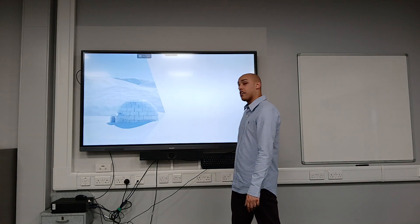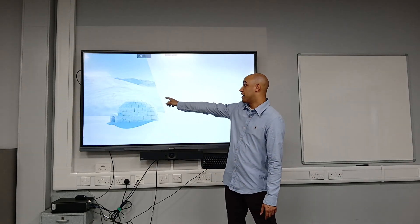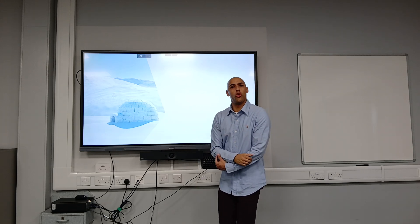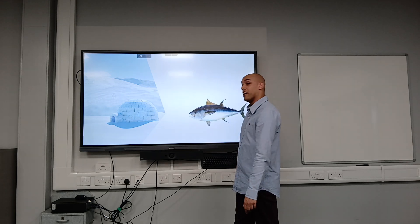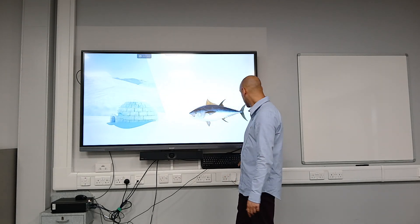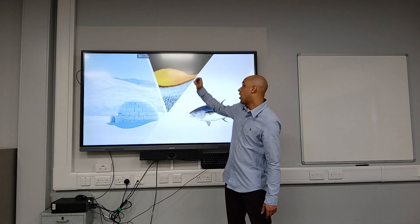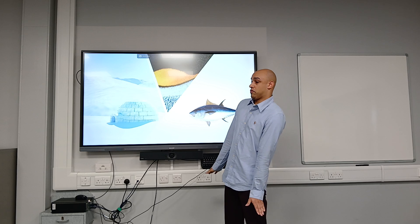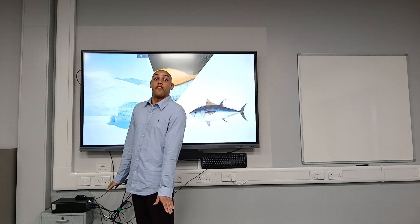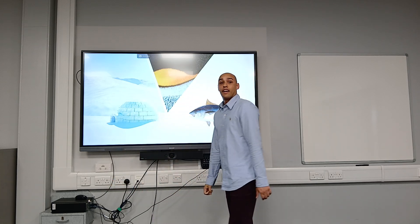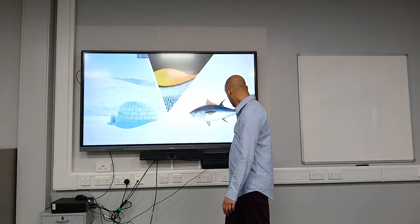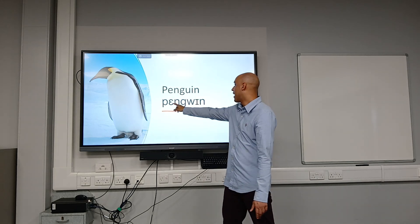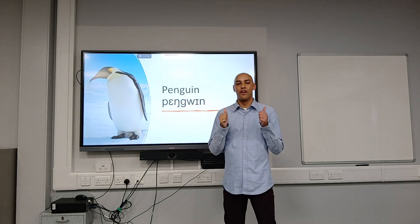The final animal lives in Antarctica where it's really cold. They eat fish and are black, yellow and white. They walk like that. Can anybody guess what it is? It is a penguin. That's right, a penguin. Very good.